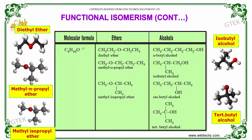For the molecular formula C4H10O, ethers are given by diethyl ether, methyl n-propyl ether, or methyl isopropyl ether. For alcohols, it is denoted as n-butyl alcohol, isobutyl alcohol, secondary butyl alcohol, or tertiary butyl alcohol.